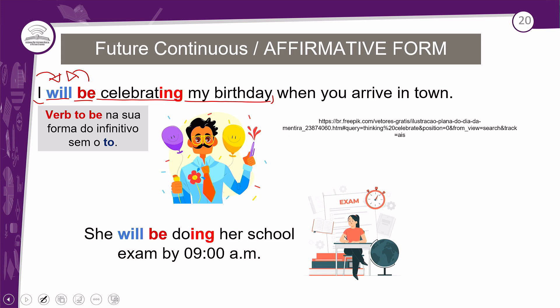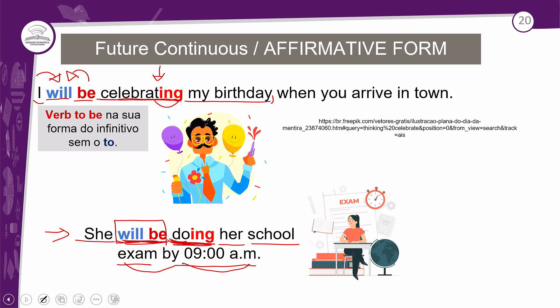'She will be doing her school exam by 9am' — ela estará fazendo a prova dela às 9 horas da manhã. O will e o be são fixos; o que muda é o verbo principal. Aqui, to celebrate → celebrating e to do → doing. É uma projeção no futuro de uma ação que ainda não aconteceu, mas que estará em progressão por um tempo determinado.